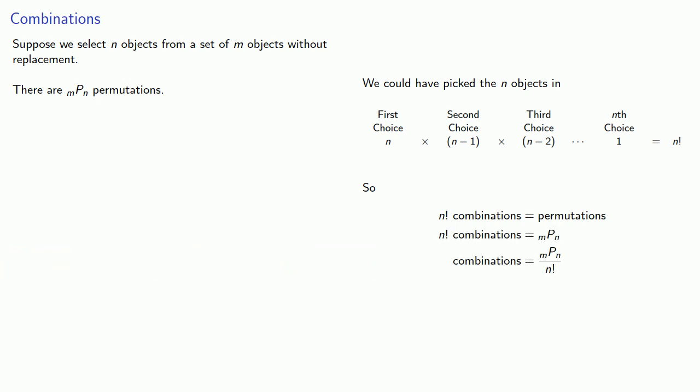And so this gives us a formula for the number of combinations. And it's useful to remember where this comes from. This is because each combination corresponds to n factorial permutations. And so there are m permute n over n factorial combinations. And we'll use the notation m combine n for combinations.